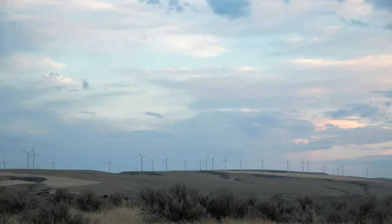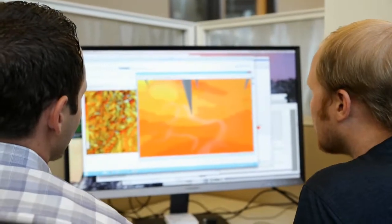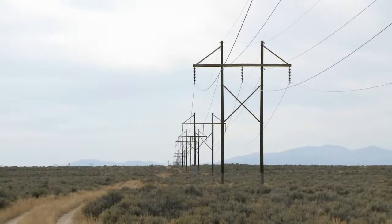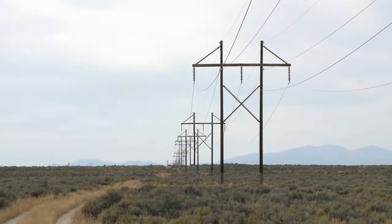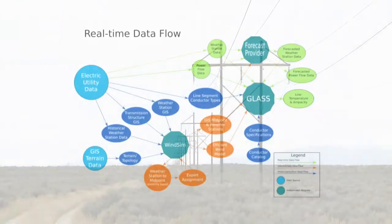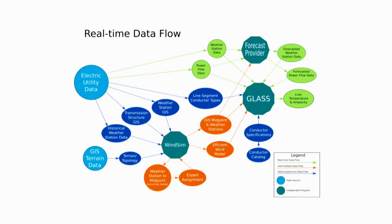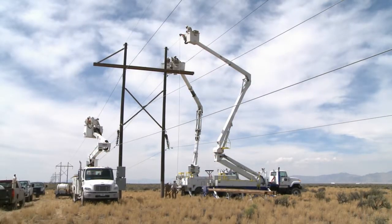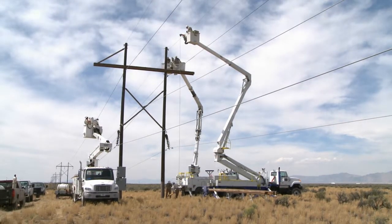With two industry-supported pilot projects in Idaho and a third in Alberta, INL has developed an industry-informed solution to monitor conditions along hundreds of miles of transmission lines. GLASS offers utilities an all-in-one tool to relieve electricity congestion, add reliability, and defer construction of new transmission lines.